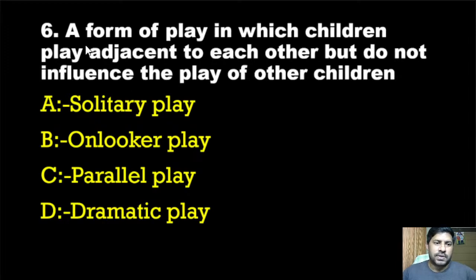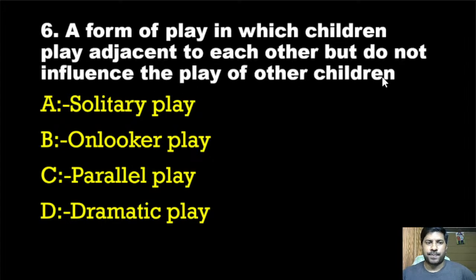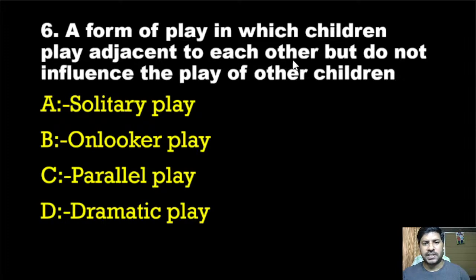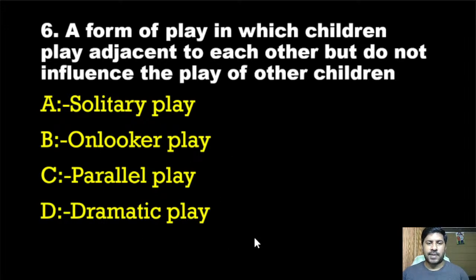Sixth question: A form of play in which children play adjacent to each other but do not influence each other's play. Options are: solitary play, onlooker play, parallel play, dramatic play.